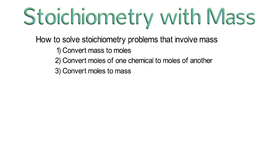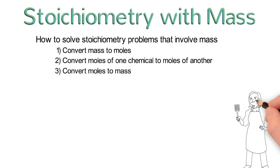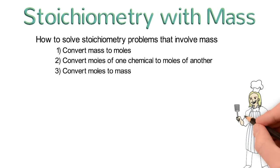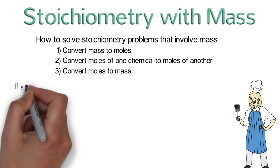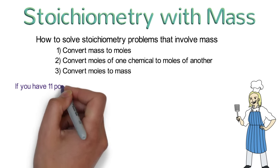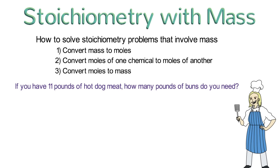Let's see how these three steps work for a problem involving food. Suppose that you are a chef at a grill restaurant and you are also in charge of ordering all the ingredients you need. Unfortunately, you are completely out of hot dog buns and your supplier sells everything in pounds. If you have 11 pounds of extra hot dog meat, how many pounds of buns do you need to purchase? Start the problem by writing down the balanced reaction — that is, your recipe.